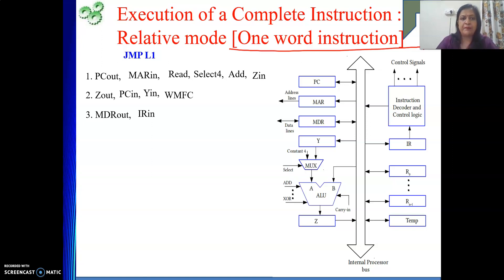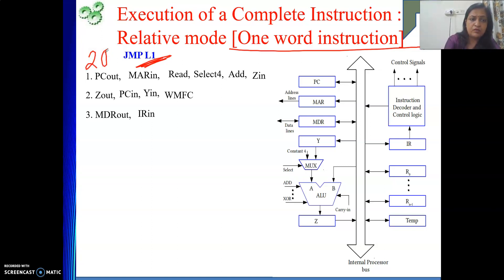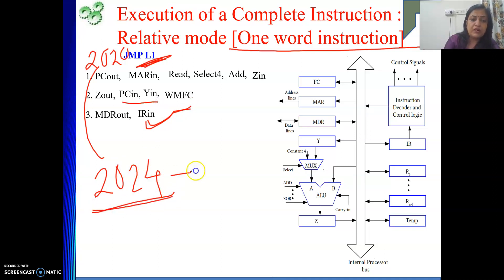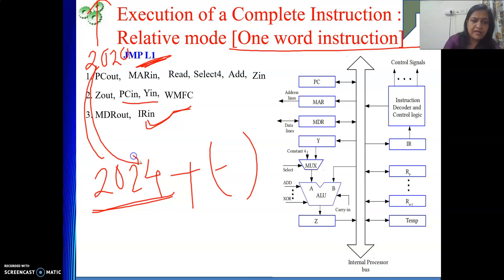It is similar to a goto statement — just go to the label L1. To go to L1, we can't jump physically; it is a logical jump. Logical jumps are performed by updating the value of PC. So with the address field of the instruction, we will add the value of PC. When executing this instruction at address 2020, the next instruction's address is 2024. By the time the instruction has come into IR, PC is already pointing to 2024. With this 2024, we will always perform an add. If we need to jump backward, it will be a negative quantity; if forward, a positive quantity. This quantity is in the address part of the instruction.